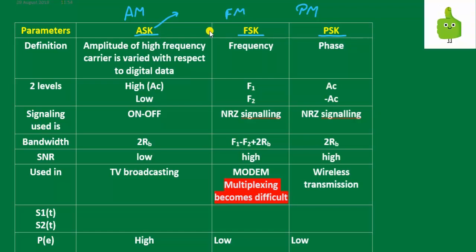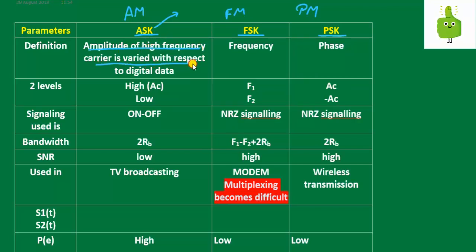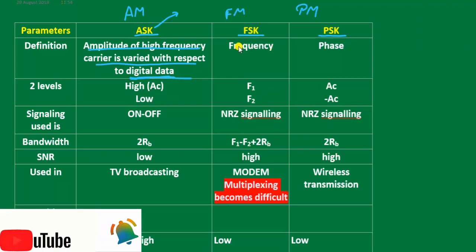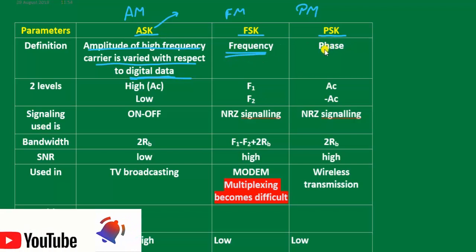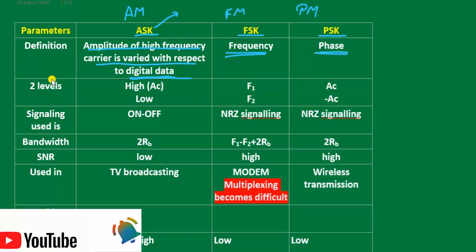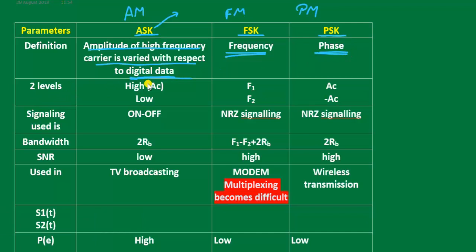ASK, FSK, and PSK means the message takes only two variants or two logic levels. Amplitude Shift Keying means the amplitude of a high-frequency carrier is varied with respect to digital data. In FSK, the frequency is varied, and in Phase Shift Keying, the phase is varied.